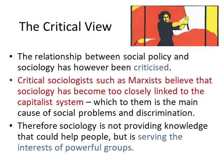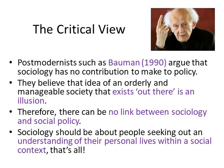Postmodernists such as Bauman argue, rather radically, that sociology has no contribution to make to policy. They believe that the idea of an orderly and manageable society that exists palpably out there is an illusion. Bauman argues there is no big object out there which is society acting upon us — in many ways we create it. This invokes an interactionist idea with a postmodernist element: we as individuals decide what is true for ourselves. Therefore, there can be no link between sociology and social policy because there is no absolute truth. Sociology should be about people seeking understanding of their personal lives within a social context — it's a tool for individuals, not a tool to change the world, because the modernist project of constant improvement and teleological progress is now dead.